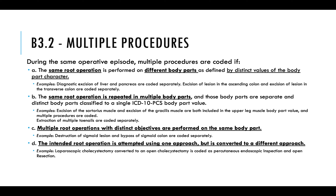The second circumstance is the same root operation repeated in multiple body parts — for example, excision of the sartorius muscle and excision of the gracilis muscle are both included in the upper leg muscle body part value, so multiple procedure codes are used. Third, multiple root operations with distinct objectives are performed on the same body part — for example, destruction of the sigmoid lesion and bypass of the sigmoid colon are coded separately. Fourth, the intended root operation is attempted using one approach but is converted to a different approach — for example, if a laparoscopic appendectomy has complications and must switch to an open appendectomy, both codes are included.